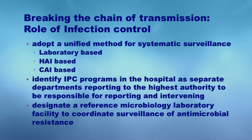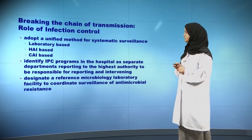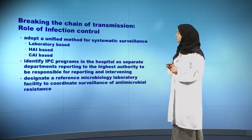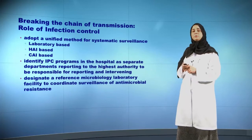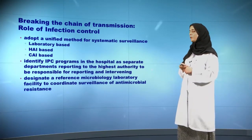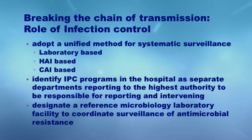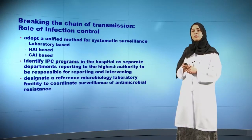There also has to be surveillance for healthcare-associated infections, linking them to specific pathogens, as well as community-acquired infections. There needs to be a specific infection prevention and control program within the hospital, with a separate department reporting to a higher authority, able to establish surveillance programs, allow for interventions and communication with healthcare workers, and produce accountability data. There also needs to be a designated reference microbiology laboratory able to monitor the emergence of resistance within the community, probably referring to the Ministry of Health within a specific country.